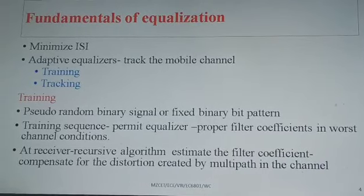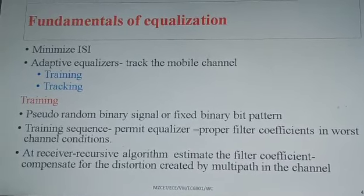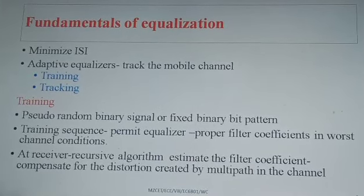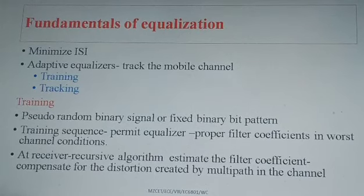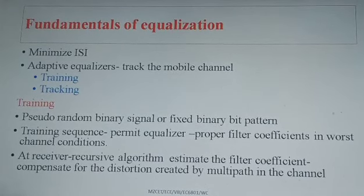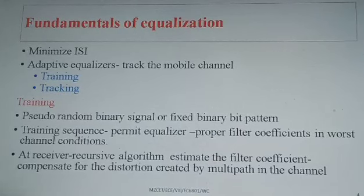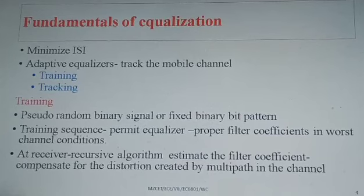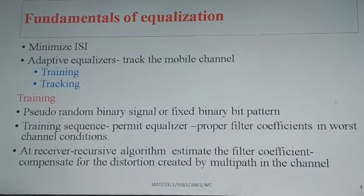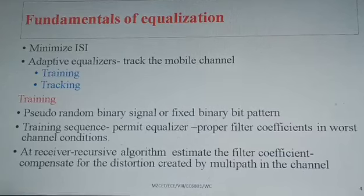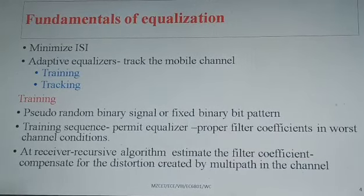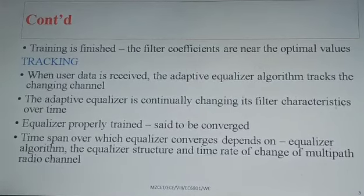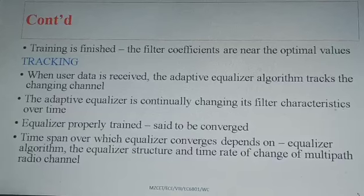The two modes are training and tracking mode. At the time of training mode, a pseudo-random binary signal or a fixed binary bit pattern is applied as the training sequence. This training sequence allows the equalizer to properly choose the filter coefficients even in harsh channel conditions. The adaptive equalizer at the receiver uses a recursive algorithm to estimate the filter coefficients to compensate for the distortion. Once the training is finished, the filter coefficients are near the optimal values.